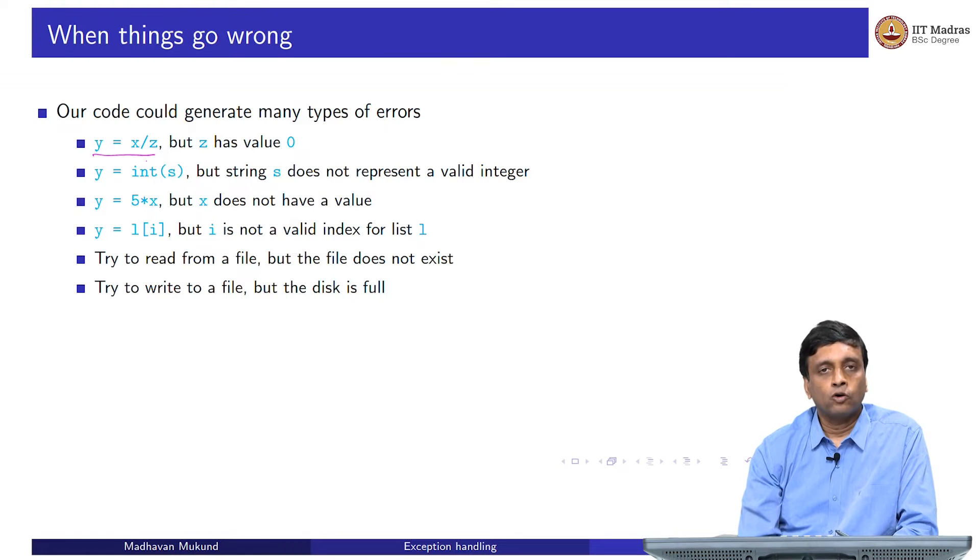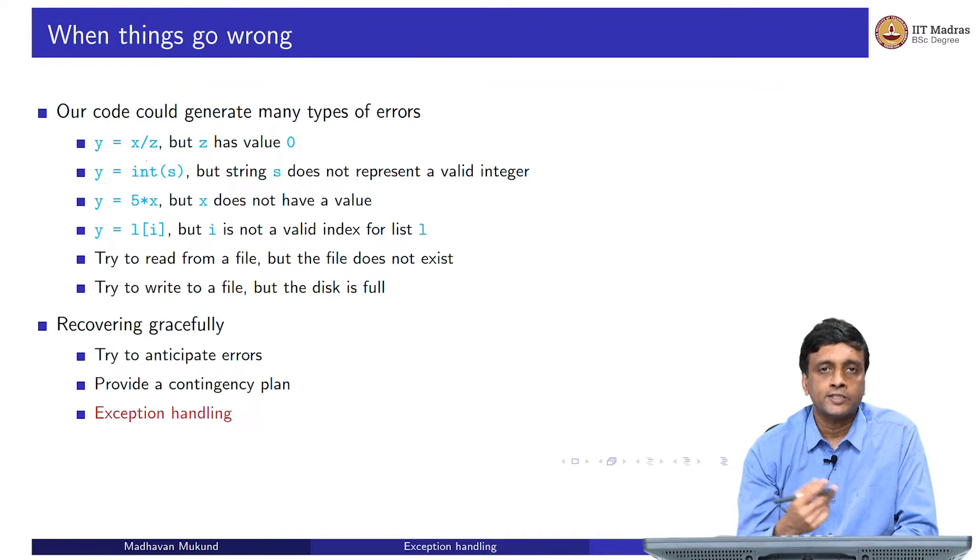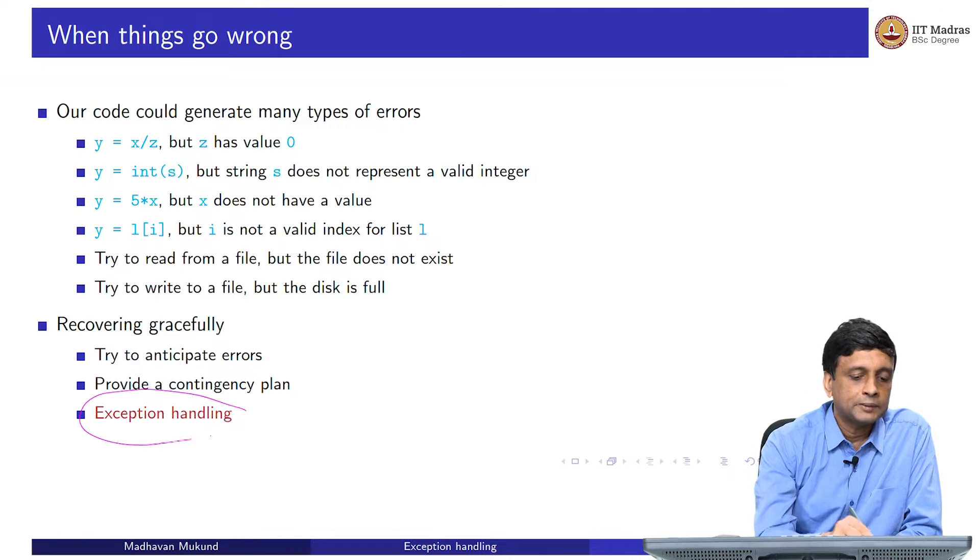Now, these are things which you cannot do much about within the program. The goal of exception handling is to recover gracefully from errors wherever it is possible. We want to try and anticipate the kind of mistakes that might occur when our code runs, and provide these alternative paths, a contingency plan as it were, saying if this happens, if it goes wrong in this way, do this, if it goes wrong in that way, do that or report something to the user. Supposing I asked the user to give me a file name, and I was not able to read the file, instead of the program aborting and throwing some error, it is better that I print out a message to the user saying the file name you provided does not exist, try again, for example. This broadly is what is called exception handling.